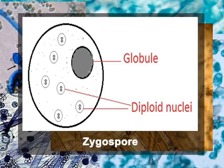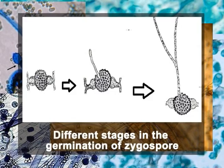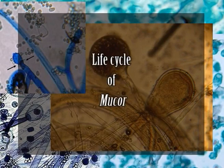The zygospore is hyaline and characteristically contains a single eccentric globule and many diploid nuclei. During germination, the outer wall cracks and the inner wall comes out in the form of a germ sporangiophore. All nuclei in the zygospore migrate to the tip of the germ sporangiophore; consequently it swells to form a sporangium called the germ zygosporangium. Rarely, more than one germ sporangiophore arises from a single zygospore; occasionally the germ sporangiophore may be branched, and in such cases more than one sporangia are present on the germ sporangiophore, each bearing a single terminal germ sporangium containing many spores.